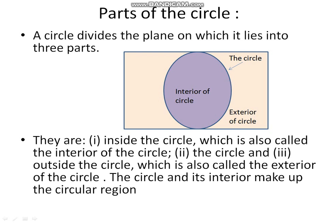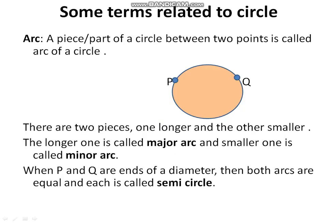The circle and its interior together make the circular region. The circle alone is not the interior region — together they form the circular region.